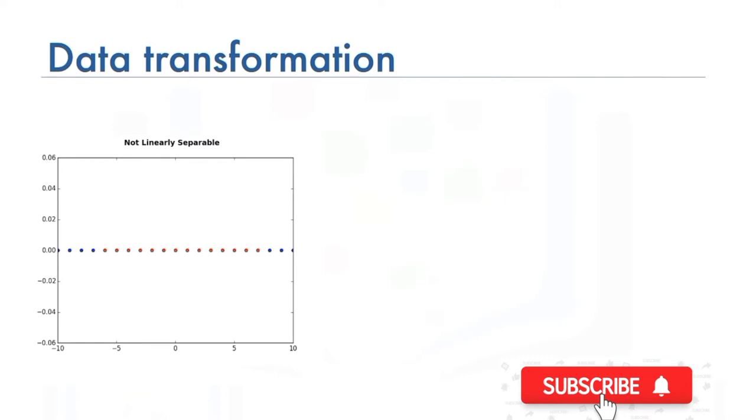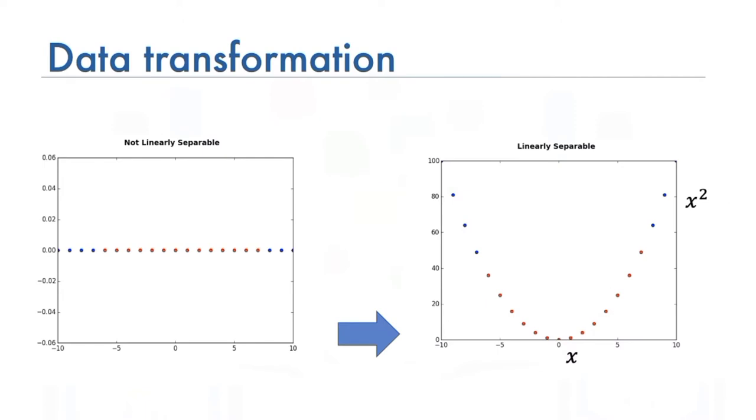We can transform the data to make a space where it's linearly separable. For the sake of simplicity, imagine that our dataset is one-dimensional data. This means we only have one feature, X. As you can see, it is not linearly separable. We can transfer it into a two-dimensional space. For example, you can increase the dimension of data by mapping X into a new space using a function, which outputs X and X squared. Now the data is linearly separable.